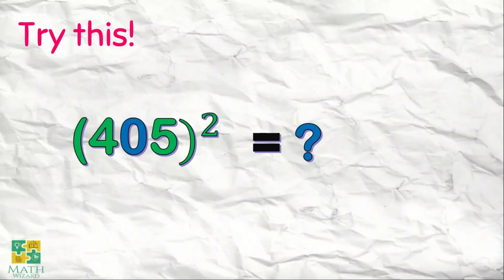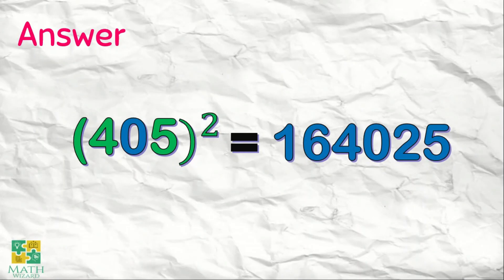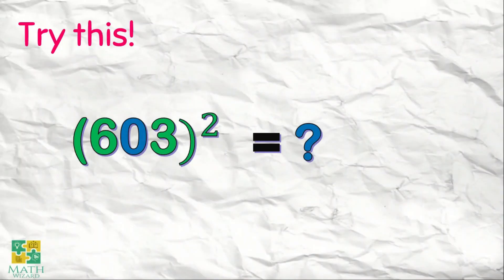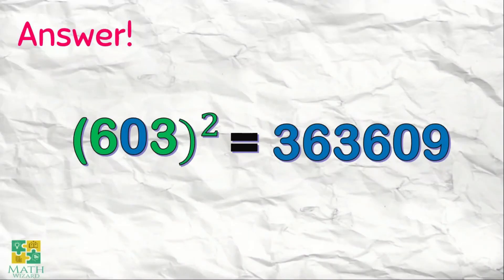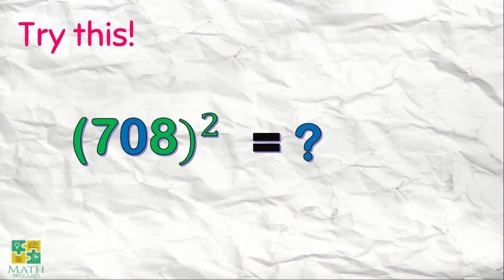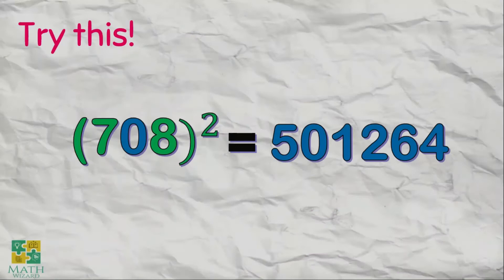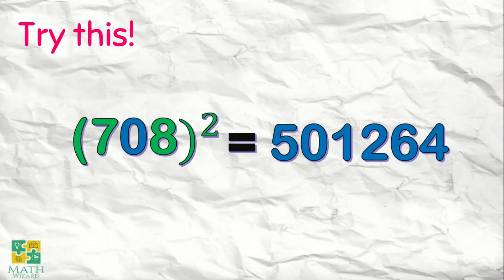Try this one: the square of 405. The answer is 164,025. Next one — the answer is 363,609. Here's another one — the correct answer is 501,264.